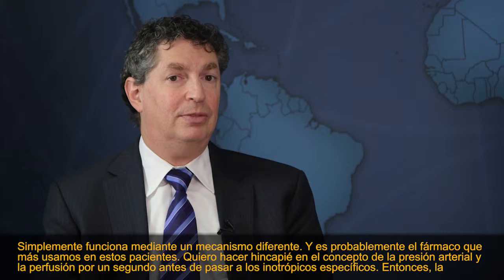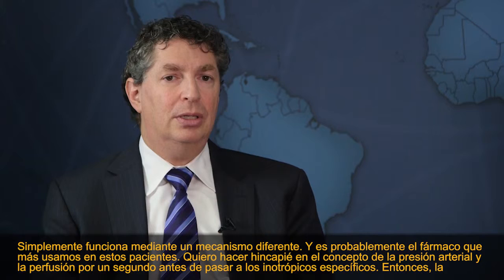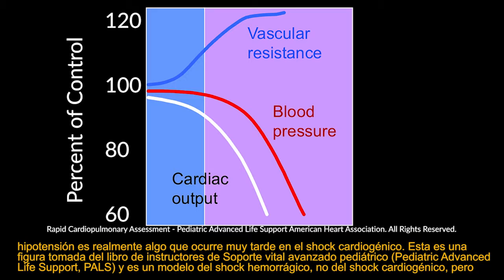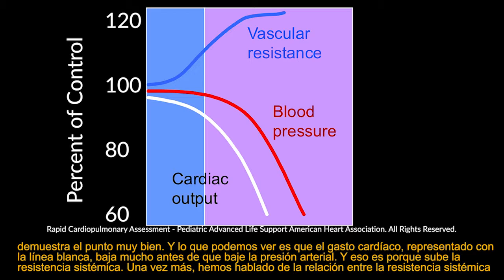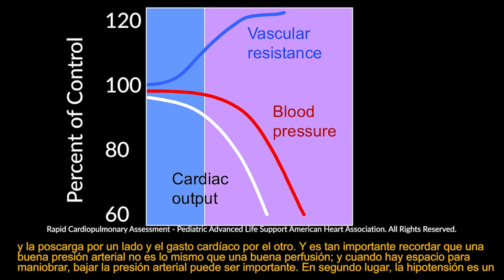Regarding blood pressure and perfusion: hypotension is a very late finding in cardiogenic shock. A figure from the PALS instructor book, modeling hemorrhagic shock, demonstrates that cardiac output falls long before blood pressure falls — because systemic resistance increases. A good blood pressure is not the same as good perfusion. When there is room to maneuver, lowering blood pressure can be important. And hypotension is a very late and dire finding.